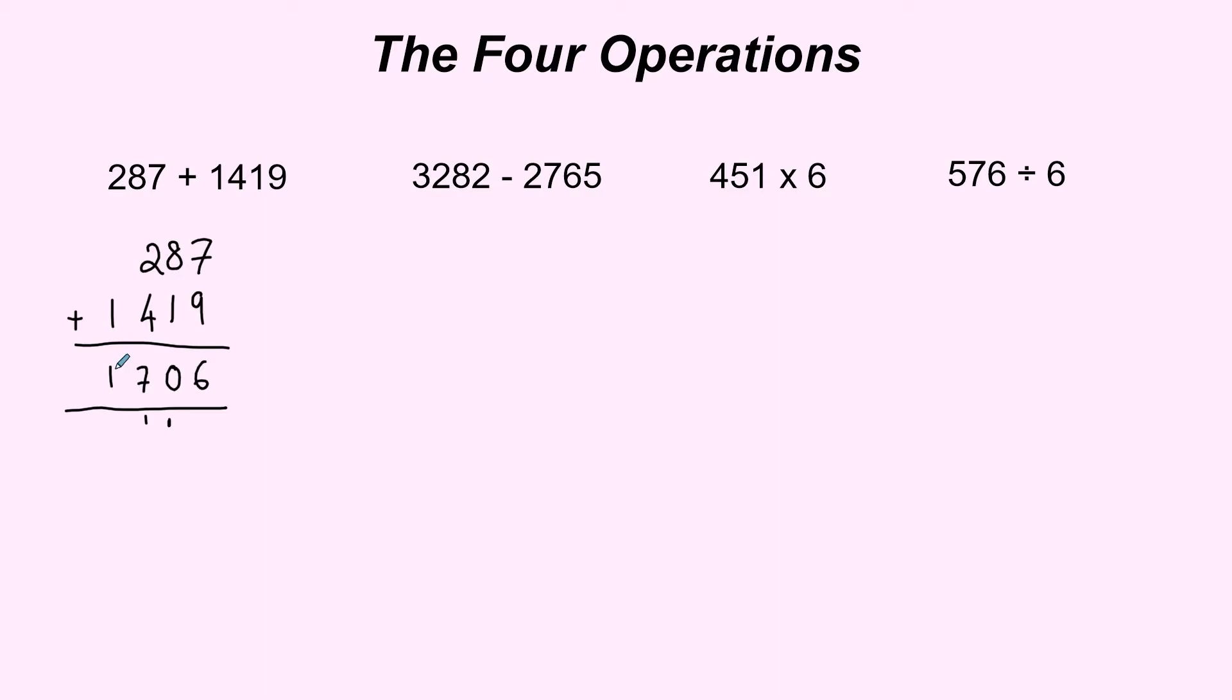Okay so the second question is a subtraction and it works exactly the same way but there are a few differences so we'll see that when we go through them. So 3282 we're taking away 2765. This time when you're subtracting order is important so you have to make sure the first number goes on the top line.